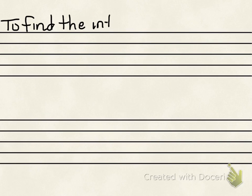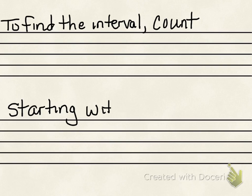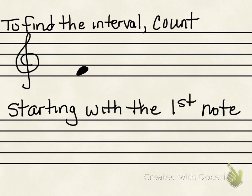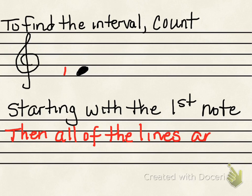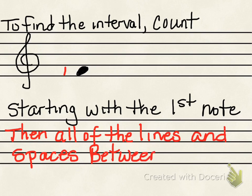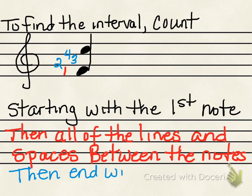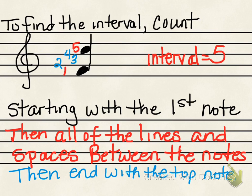To find the interval, we need to count. We start with the first note and label it one. Then we're going to count all the lines and spaces in between the notes. We end with the top note. Notice that you start off with the bottom note — that counts as one.